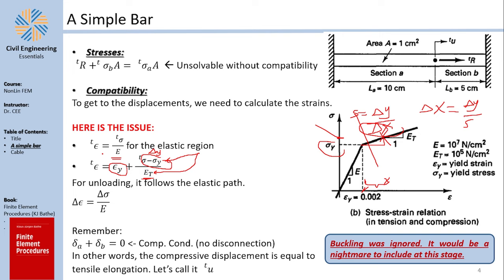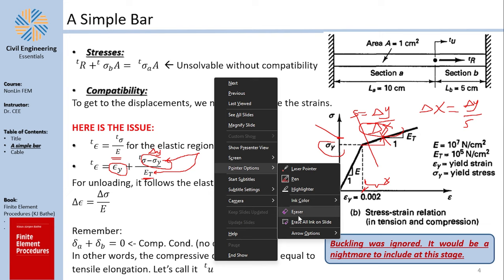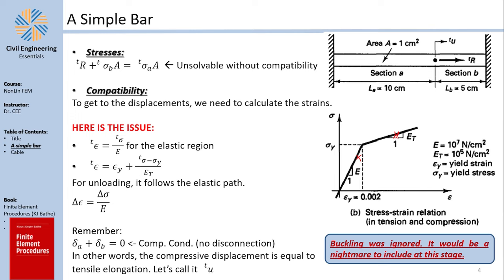I suggest you pause the video and try to derive that yourself — it would take about ten minutes and is really worth the effort. For unloading, as you studied in mechanics of materials: if you are at any point elastic or plastic and you unload, it follows a path parallel to the elastic line. The change in strain is the stress change divided by the elastic modulus E, and this is always the linear elastic modulus regardless of where you are.